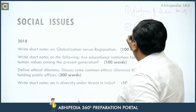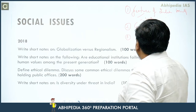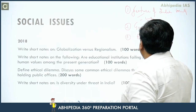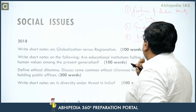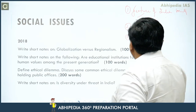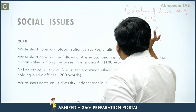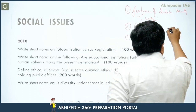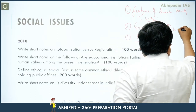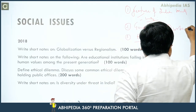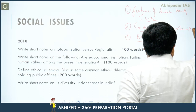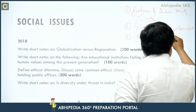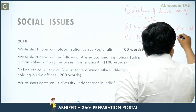The third important area is education — questions have come two or three times. The fourth area is urbanization, and then there are poverty questions.